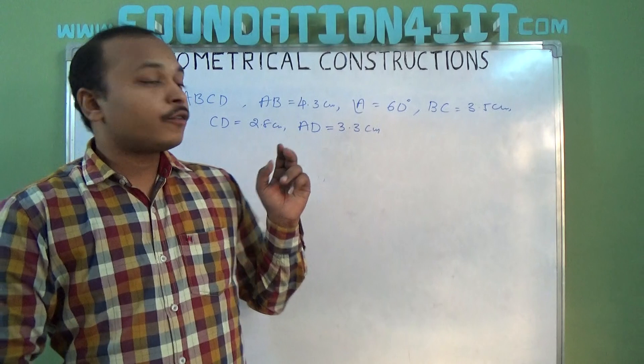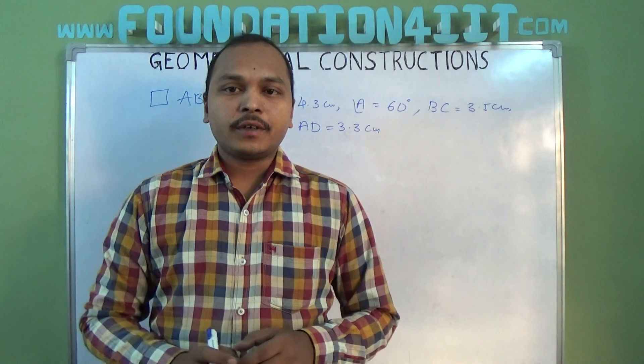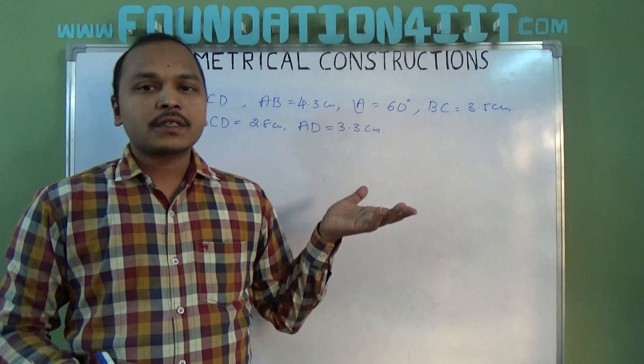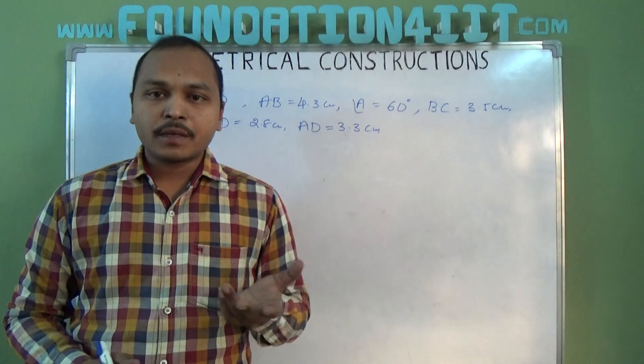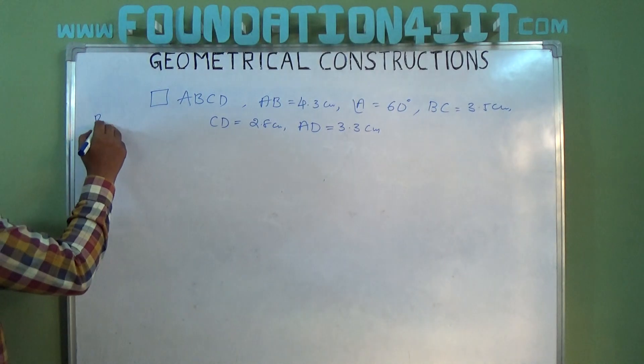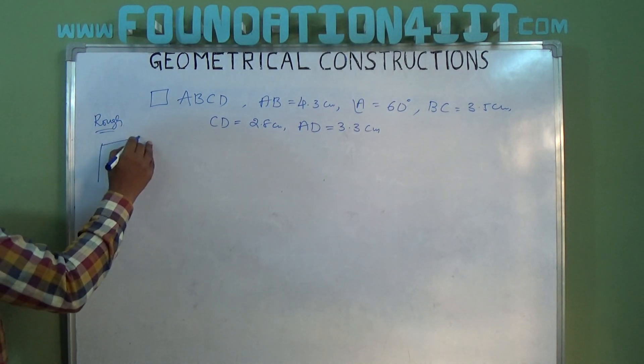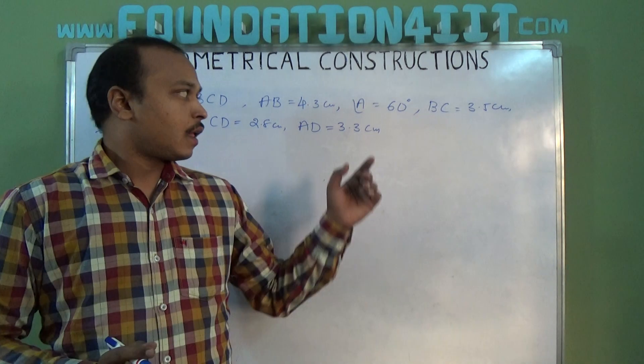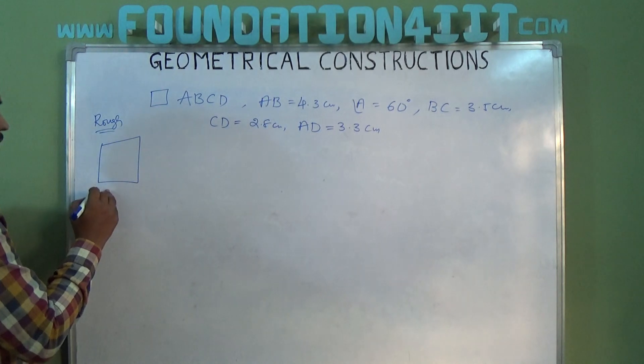First, you will see the rough diagram. We can take any one of the sides which is given as the base for easy construction. If you take a rough diagram, I need to construct a quadrilateral. These are four sides, so I'm taking A, B, C, D.